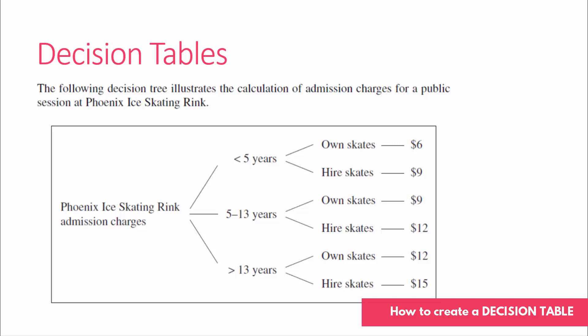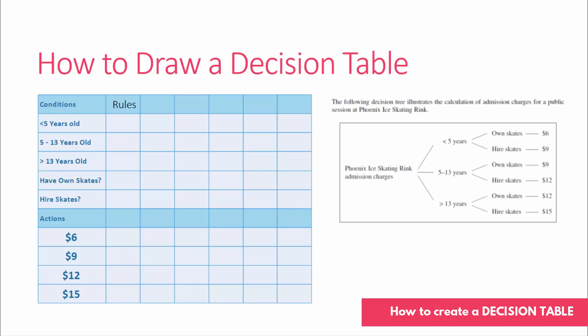To break this down, we have a few things: we have conditions and we have rules. So how do you actually draw a decision table? The first thing you need to do is break down and find out what the conditions are — in this case, it's all of this information over here.